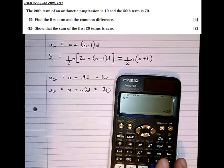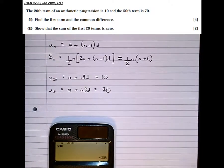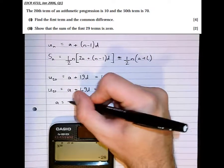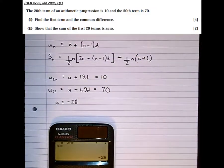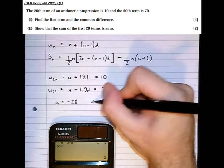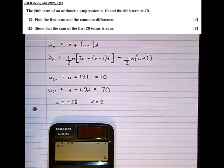And we'll see that a is minus 28, a equals minus 28, and d equals 2. So we've found the first term and the common difference.